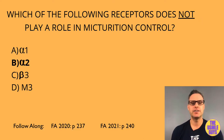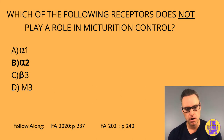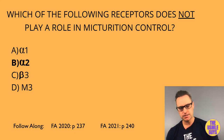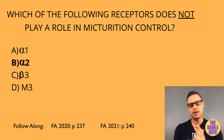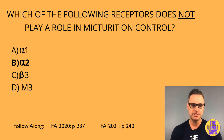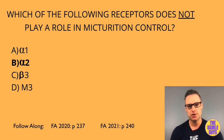The correct answer here is B, alpha-2. The micturition center is located in the pons and regulates involuntary bladder function by coordinating the activities of the sympathetic and parasympathetic nervous systems. Urination is parasympathetic — increasing parasympathetic activity causes urination, while stimulating the sympathetic system causes urinary retention.